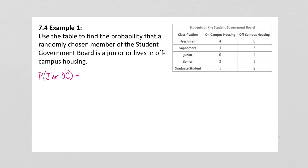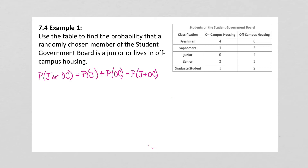To find this probability, we'll use our rule for OR. That would be taking the probability of being a junior, plus the probability of living in off-campus housing. And then, if there's the possibility of both, we need to subtract off those that are both a junior and living in off-campus housing, because we've already included them.